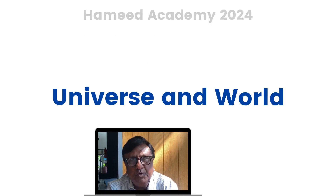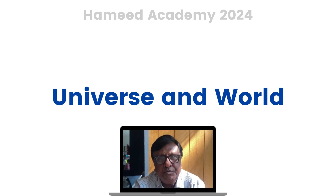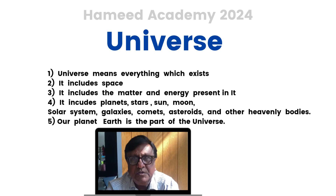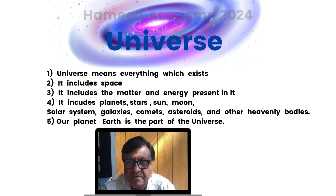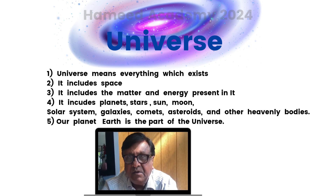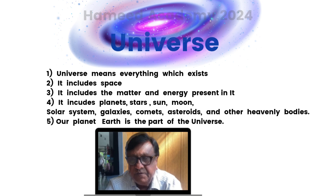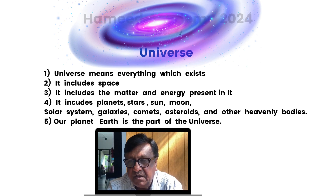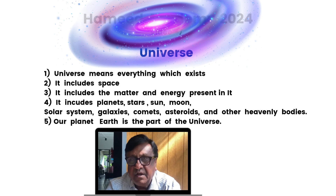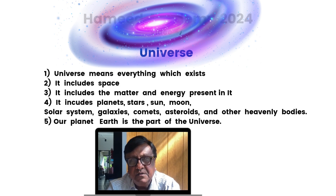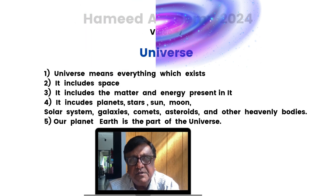Coming to the first topic: universe and world. We should know the difference between universe and world. Universe means everything which exists. It includes space, the matter and energy present in it, planets, stars, sun, moon, solar system, galaxies, comets, asteroids, and other heavenly bodies. Our planet Earth is part of the universe.